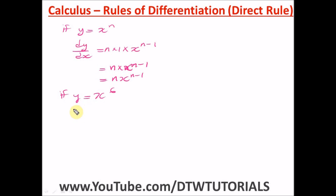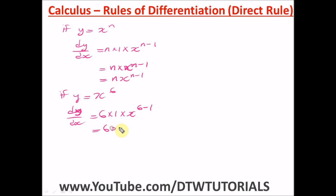For example, if y is equal to x raised to power 6, the derivative dy/dx is equal to 6 times 1 (the coefficient) times x raised to power 6 minus 1. Six times 1 is 6, and 6 minus 1 is 5, so dy/dx = 6x⁵.